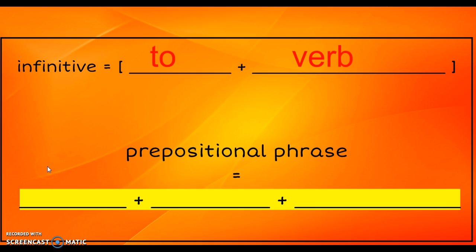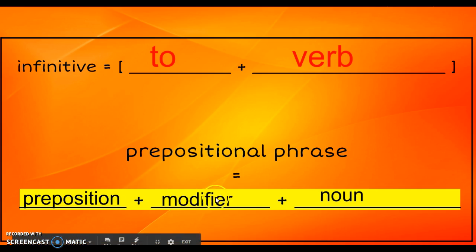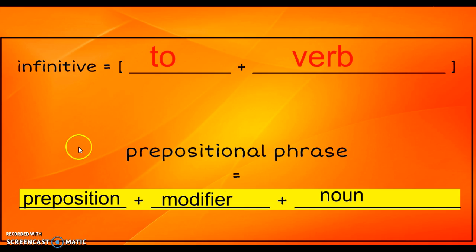If it's a prepositional phrase, we have to follow this formula: 'to' with a modifier after it and a noun at the end. There would not be allowed to be a verb in there.